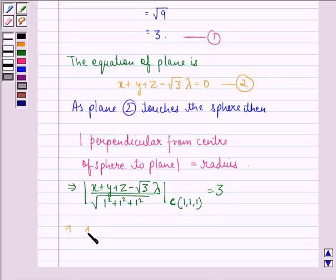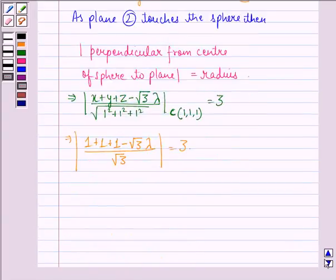This implies |1 + 1 + 1 - √3λ| / √3 = ±3.